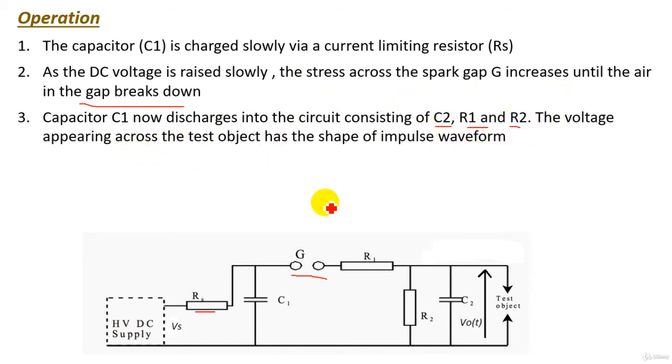The voltage appearing across the test object here, this voltage which is Vout of t has the shape of impulse waveform. Also, resistance R1 will primarily damp the circuit and controls the front time. Also, resistance R2 will discharge the capacitors and therefore essentially control the tail time.